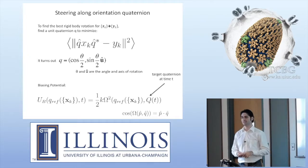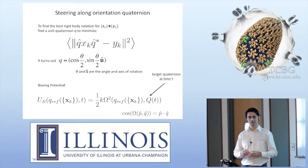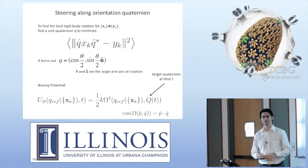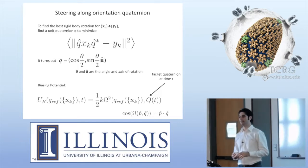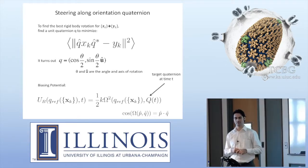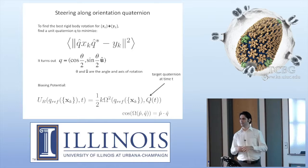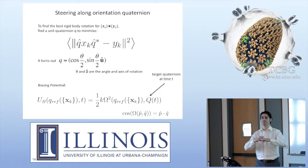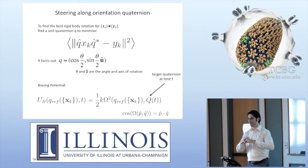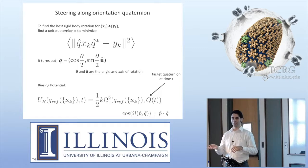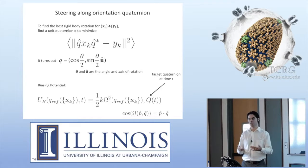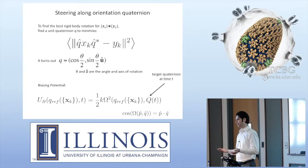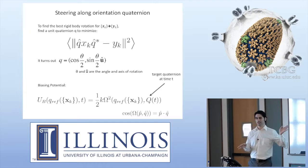What is orientation quaternion? It's basically a mathematical tool to find the best rotation to superimpose two structures on top of each other. This is what you typically do before you calculate RMSD. If you are doing the best fit with RMSD, you need to align them first before you calculate the RMSD. Orientation quaternion is one of the algorithms to do that. It's already implemented in a lot of codes that do RMSD calculation.